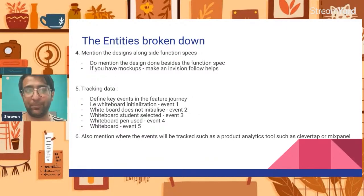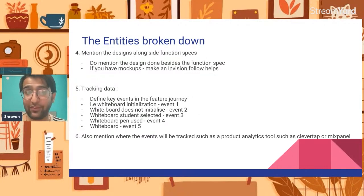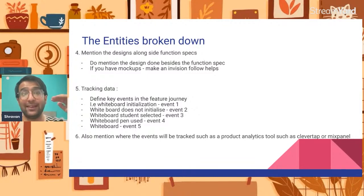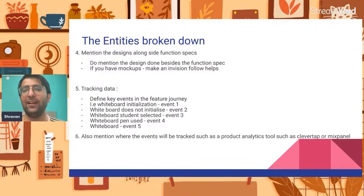The fifth part of the PRD is tracking of data. You define key events in the user journey: event one — whiteboard start; event two — whiteboard does not initialize; event three — whiteboard student selected; event four — whiteboard pen used; event five — whiteboard stopped. You mention product analytics events for tools like Mixpanel or CleverTap so that every button click in the feature can be tracked.